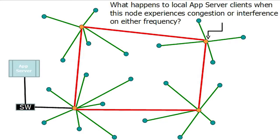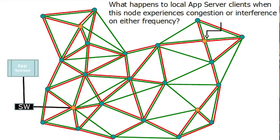On a traditional wireless network, what happens to local application server clients when this node experiences congestion or interference on either frequency? Well, application performance becomes poor or even fails completely. But on a Rajant kinetic mesh, when the same node experiences congestion or interference, there's really no perceivable impact because alternate routes are utilized immediately.